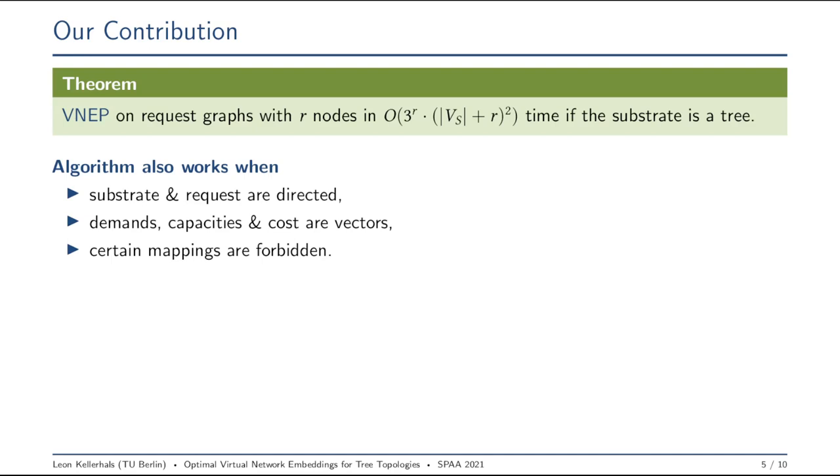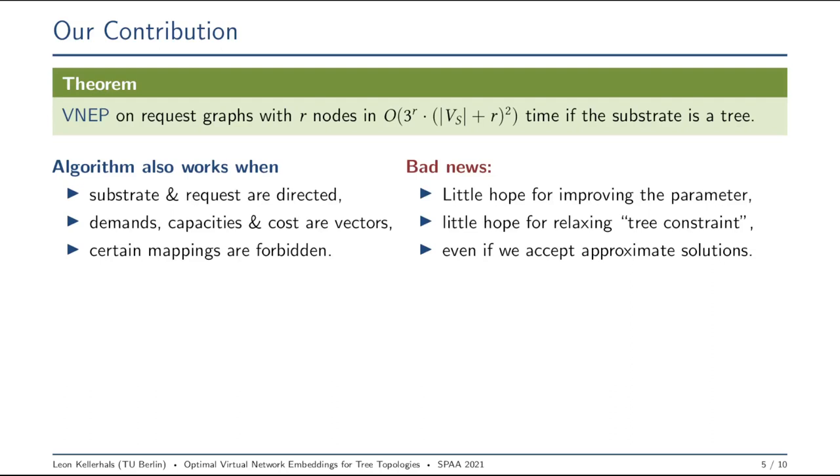Along with the algorithm, we also bring some hardness results or some bad news. With these, we can show that there's very little hope for improving this parameter r, the size of the request graph or the number of nodes in the request graph. We cannot hope for an algorithm that somehow has a smaller exponent. And also, there's little hope for relaxing the tree constraint. That is, we probably cannot use some measure that describes how tree-like the substrate is. And these little hopes also hold even if you would allow for some solutions with only approximation guarantees and not exact solutions.